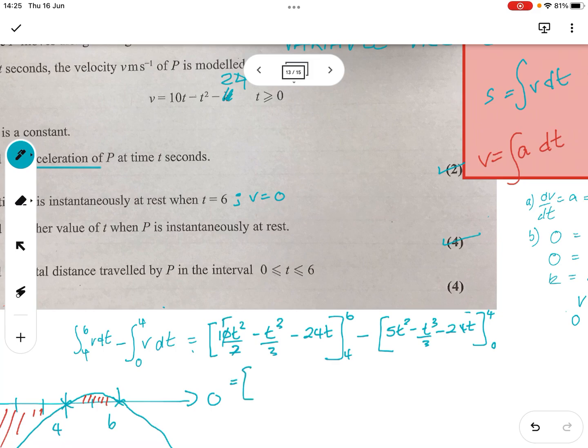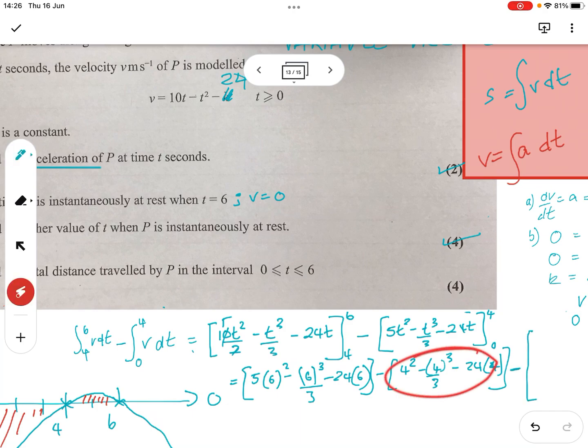Okay. Because that makes 5. Right. Sub in. 6. So, 5 times 6 squared minus 6 cubed over 3 minus 24 times 6. And then do the second part of that, which is minus 4 squared over, no, just 4 squared, minus 4 cubed over 3 minus 24, 4. And then we're going to take away whatever we got for this. And if we shove in 0, minus 0.